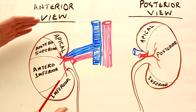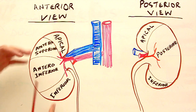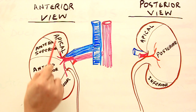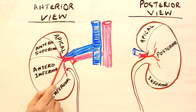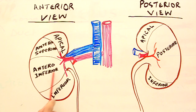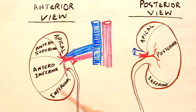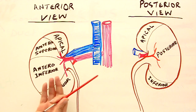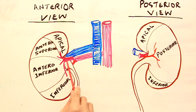Each kidney, for descriptive purposes, has been divided into five vascular segments. There is an apical segment, served by the apical segmental artery. Then an anterior superior segment, an anterior inferior segment served by their respective segmental arteries, and an inferior segment served by the inferior segmental artery. These segments occupy the anterior or front of the kidney.